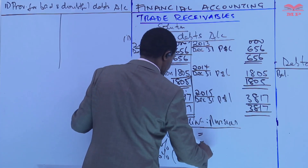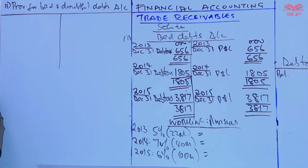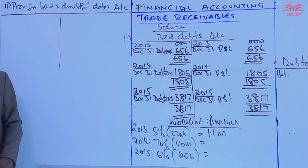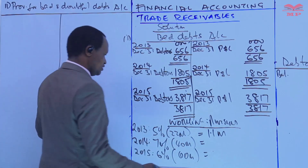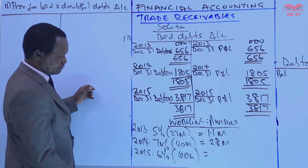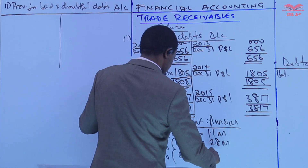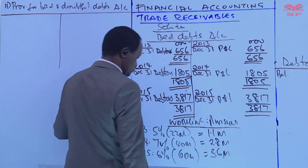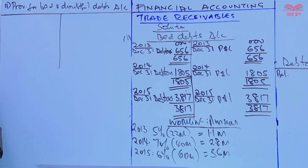Five percent of 22 million gives 1.1 million. In 2014, seven percent of 40 million — that is 2.8 million. Then six percent of 60 million: six times six is 36, so this is 3.6 million. So these are the provisions for the three years.